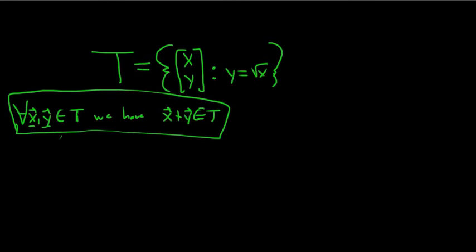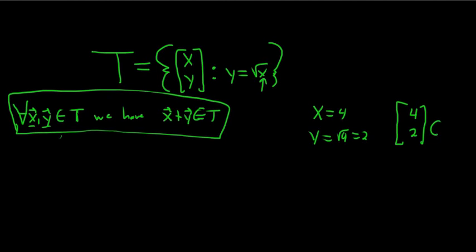So let's find two simple vectors that are in T. The first one that comes to mind is (0, 0), but that feels like it's not going to work. So let's try something else. What's an easy number we can take the square root of — how about 4? So if x is 4, y is the square root of 4, that's 2. So the vector (4, 2) is in T. What's another number that's easy to take the square root of? How about 9? If x is 9, y is the square root of 9, which is 3. So the vector (9, 3) is in T.